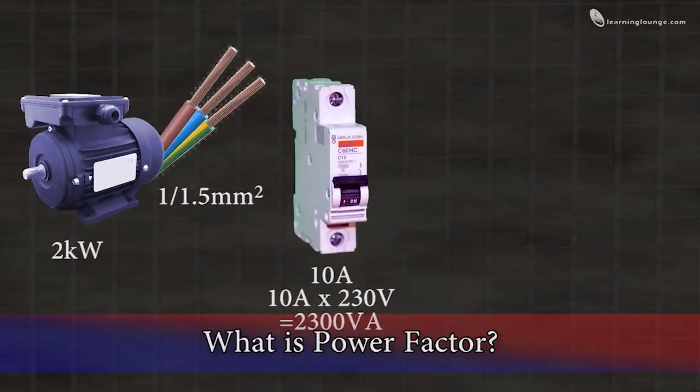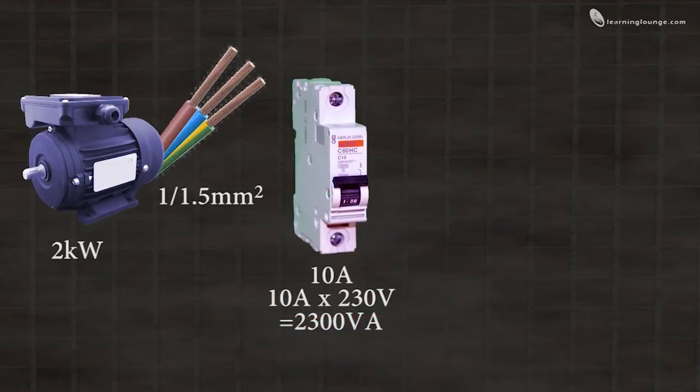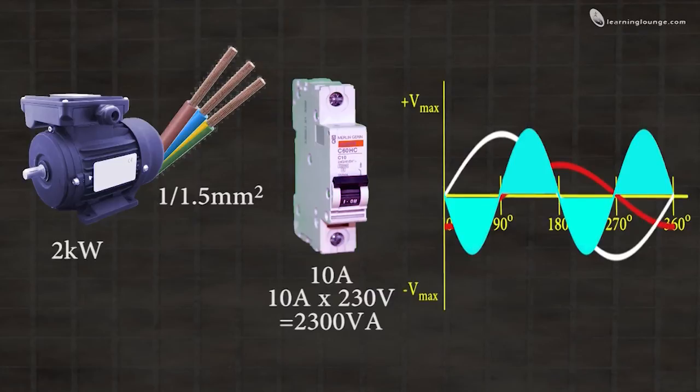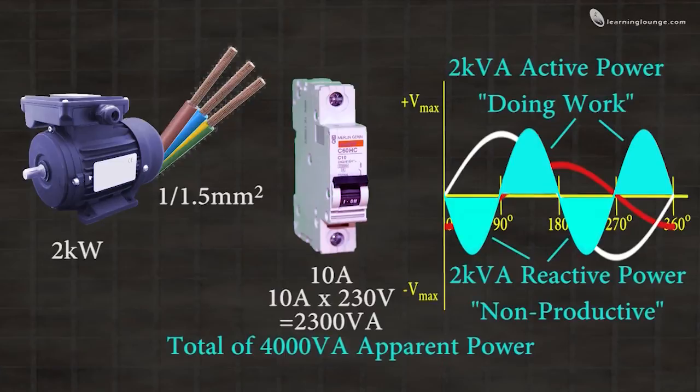So on paper so far, our 2300 VA can accommodate our 2000 watts of power. However, if we consider power factor and the fictional example of a purely inductive load, this motor could in theory have up to another 2000 volt amps flowing at the same time, which will well exceed the ratings of both cable and circuit breaker.